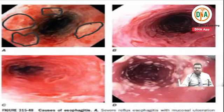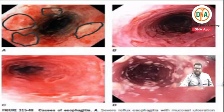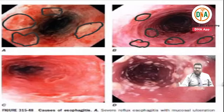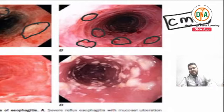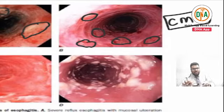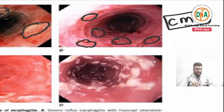Next comes figure B. In figure B, you find shallow ulcers - many shallow ulcers - and this person is suffering from HIV. For a known case of HIV or immunocompromised patient with shallow ulcers, the answer is cytomegalovirus infection. The treatment of choice for cytomegalovirus esophagitis is Ganciclovir.